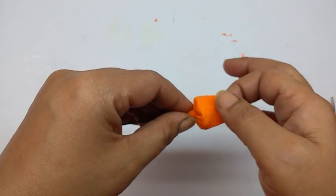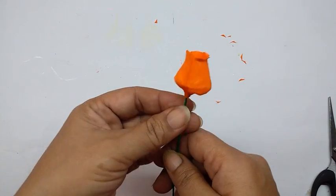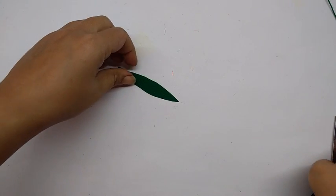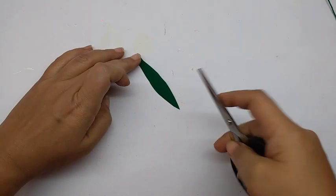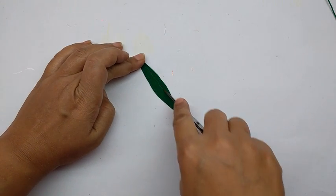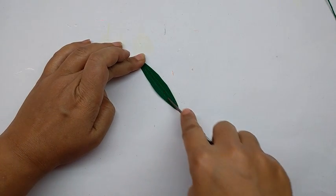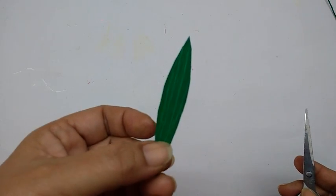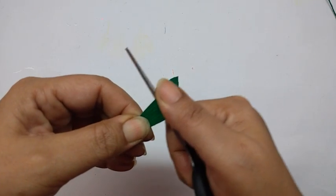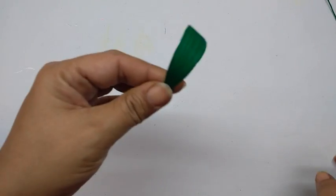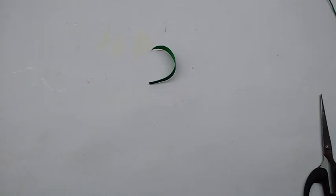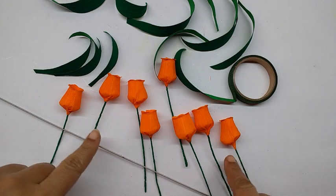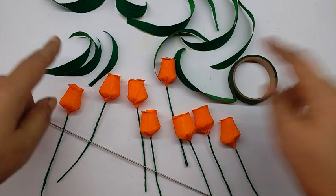Leave it and this is the flower you get. For the leaves, first with scissors or any blunt object, just score lines on it and then give it one curve. Do this with all the leaves. I've made about eight or nine flowers and all the leaves.